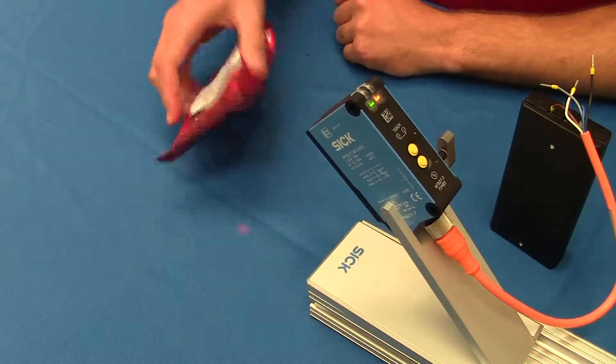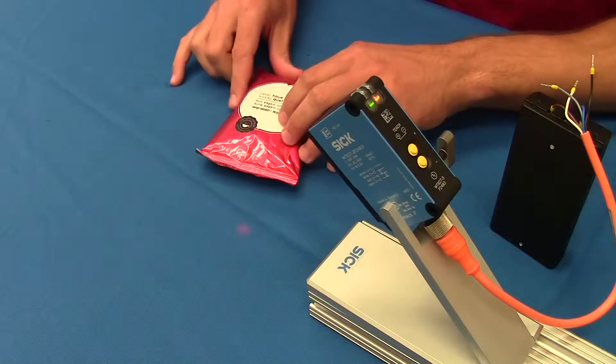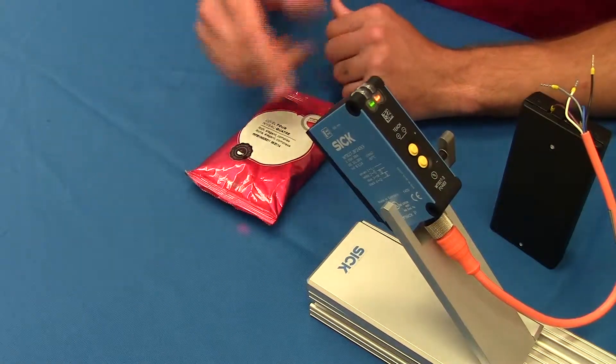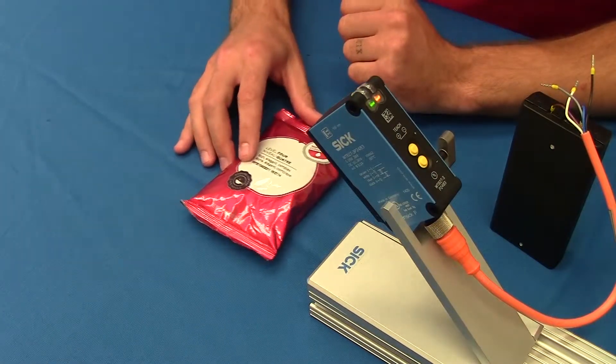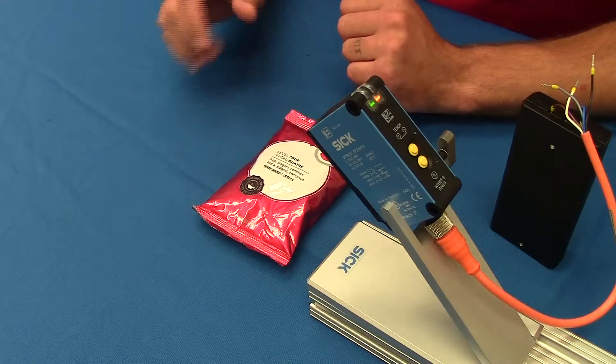Here you have a very shiny, irregular shaped coffee bag. You want to mount the sensor at an angle like this and try to find a difficult spot on there.